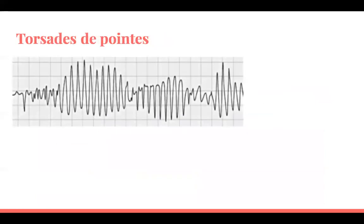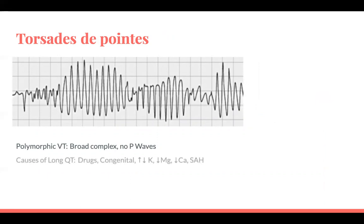Briefly, Torsades de Pointes — this is polymorphic VT, with rotation across the axis. Broad complexes, no P-waves, with that characteristic increasing and decreasing amplitude pattern. Causes of long QT predispose to Torsades: drugs include amiodarone, sotalol, SSRIs, tricyclic antidepressants, erythromycin, digoxin, and lithium. Congenital causes include Romano-Ward syndrome and long QT syndrome. Electrolyte monitoring of potassium, magnesium, and calcium is important, as is awareness that subarachnoid haemorrhage is a known cause. Management is 2 grams of IV magnesium, and DC cardioversion if unstable.